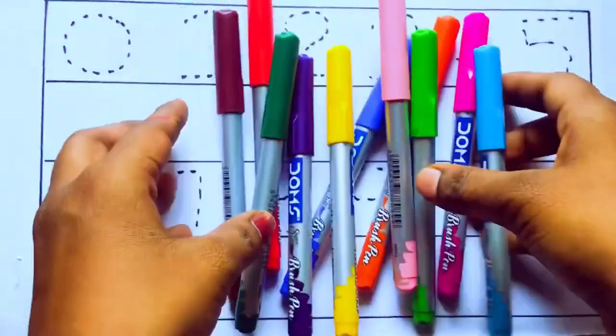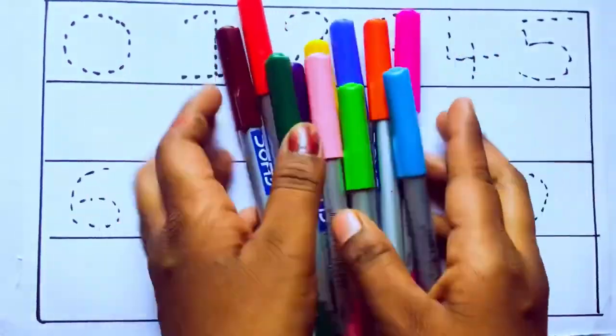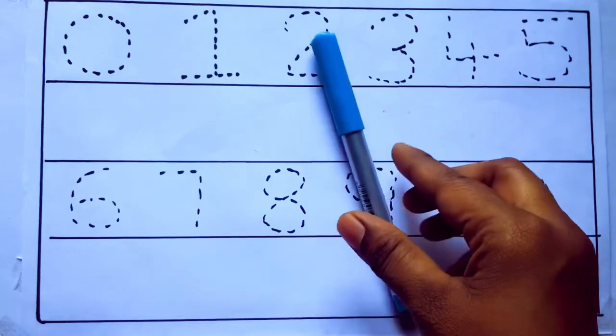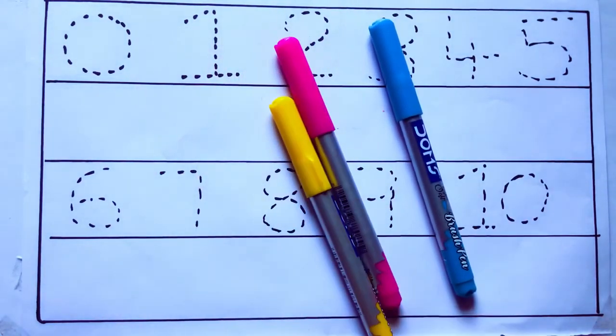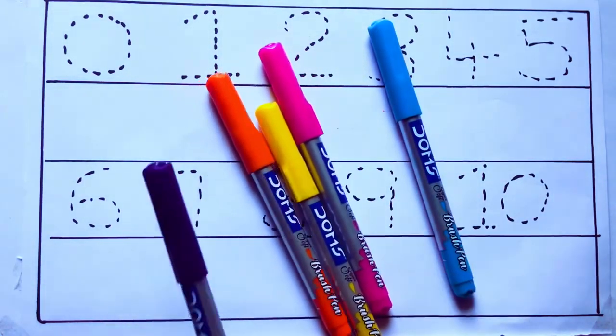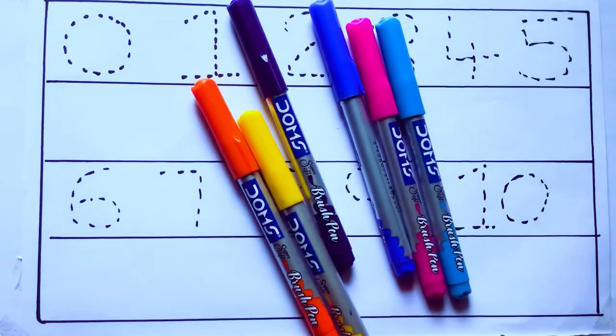Let's learn some colors. These are all the color pencils. Let's learn the names. Sky blue color, pink color, yellow color, orange color, violet color, blue color, brown color.